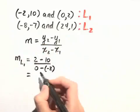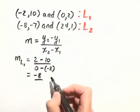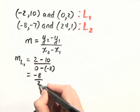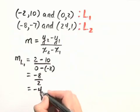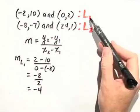Let's simplify this. We have 2 minus 10, or negative 8, over 0 minus negative 2, which is 0 plus 2, or 2. So negative 8 divided by 2 is negative 4. The slope of our first line is negative 4.